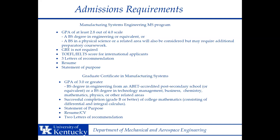For the graduate certificate in manufacturing systems, the GPA requirement is slightly higher at 3.0 or greater on a 4.0 scale. We are looking for a bachelor's degree in engineering, technology management, business, chemistry, math, physics, or other related areas. You must also show successful completion of a college mathematics course consisting of differential and integral calculus. Required documents include a statement of purpose, a resume or CV, and two letters of recommendation.